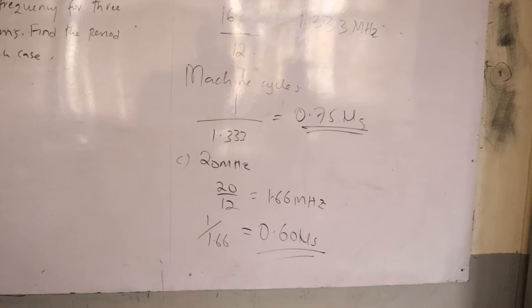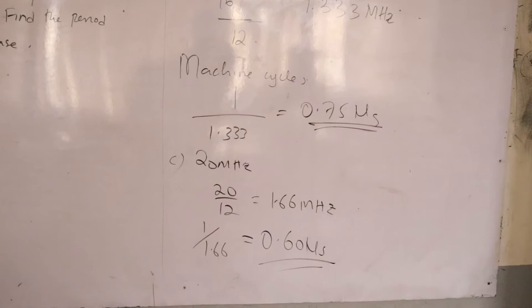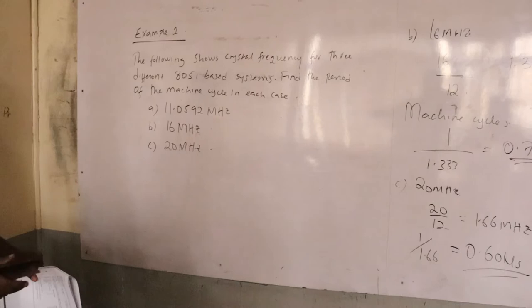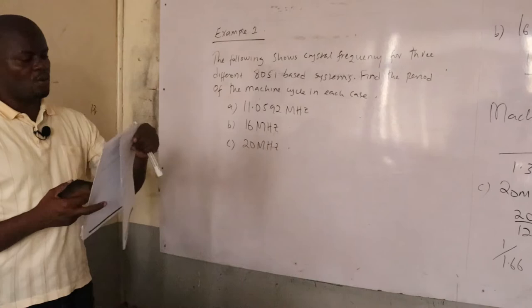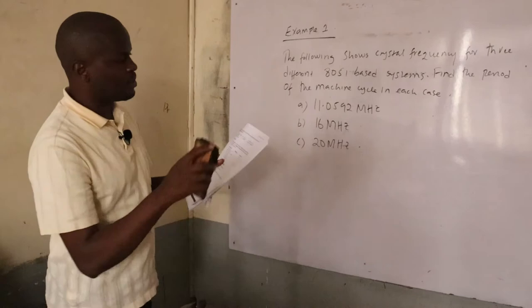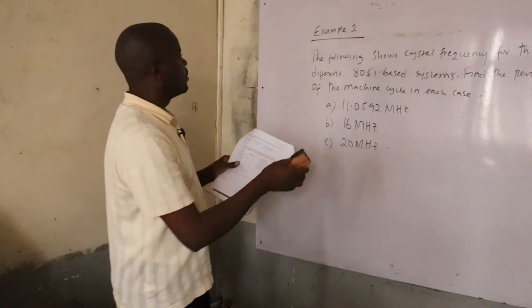Example 2 is going to be a little more illustrative. We will calculate the machine cycle first, then make reference to the instruction set to obtain the number of machine cycles per instruction, and multiply by the machine cycle time to find the execution time for each instruction.